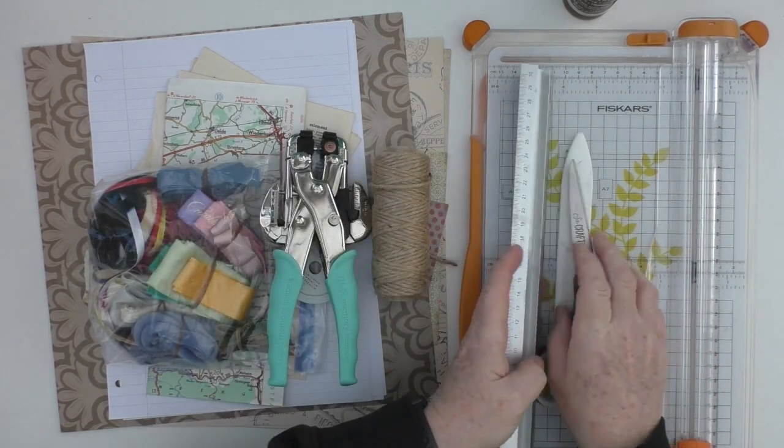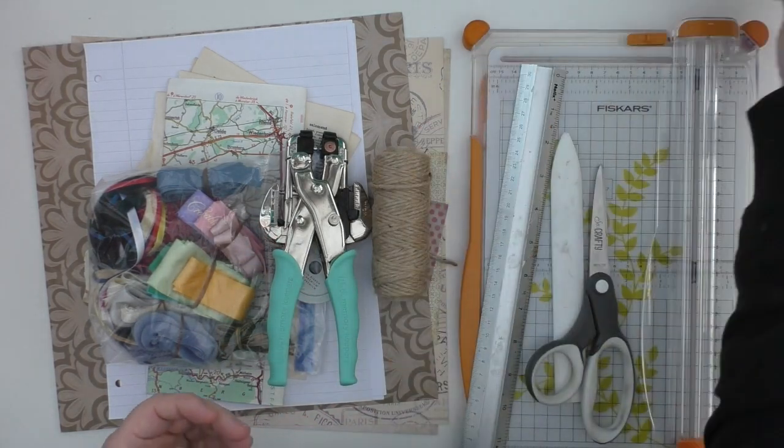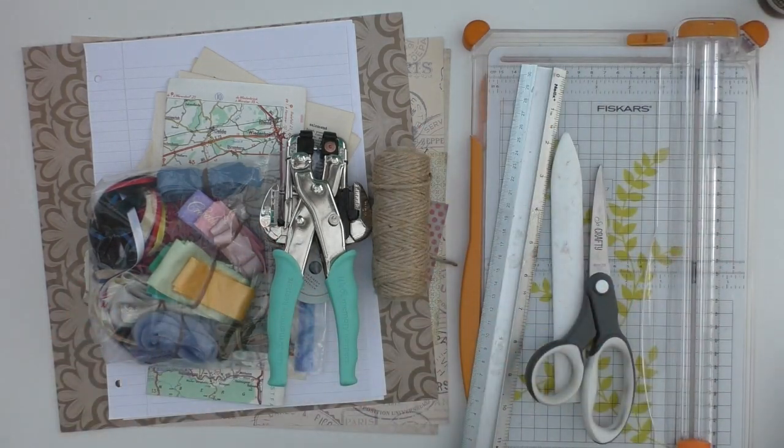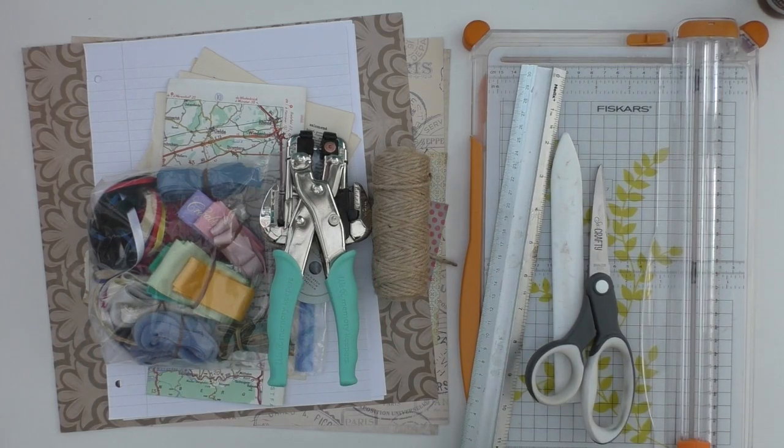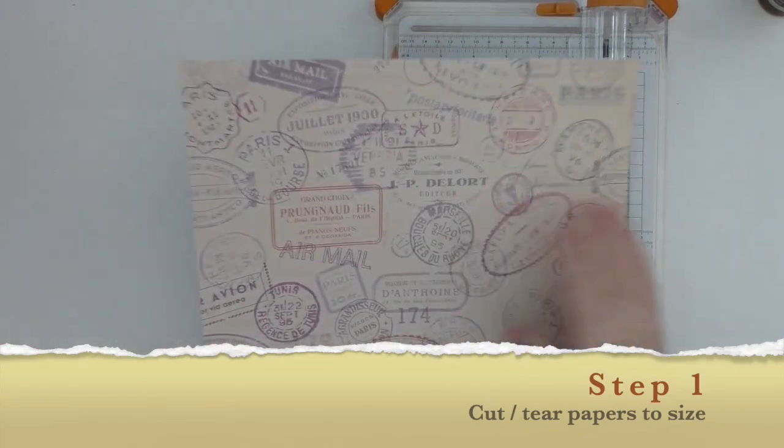A bone folder to just put a crease in the papers or of course you could use the back of your scissors. I'll also be using some glue for a second version that I'll show towards the end of this video. So let's get started.